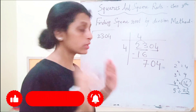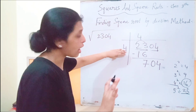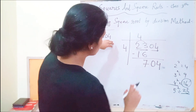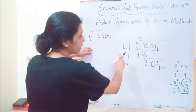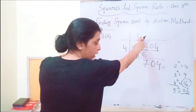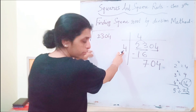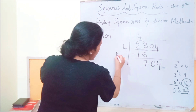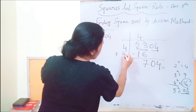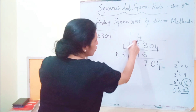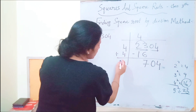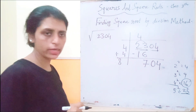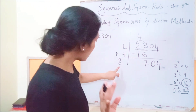Now watch carefully what we do next. The quotient so far is 4, and the divisor we wrote is also 4. We add them: 4 plus 4 equals 8. So now our new divisor base is 8.